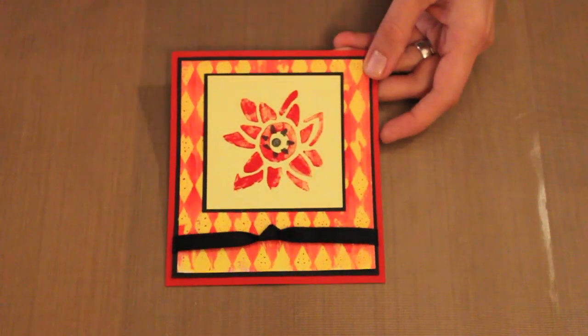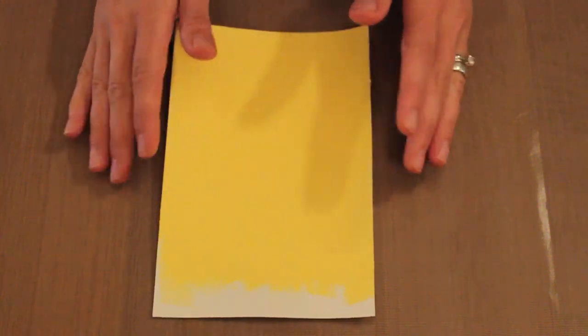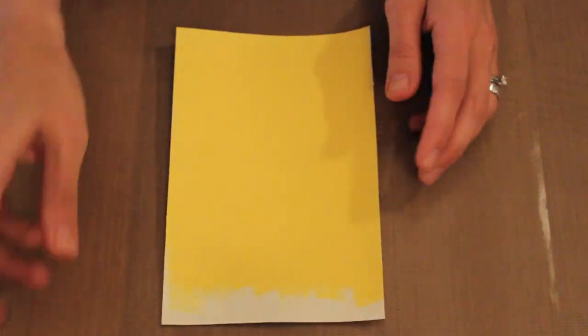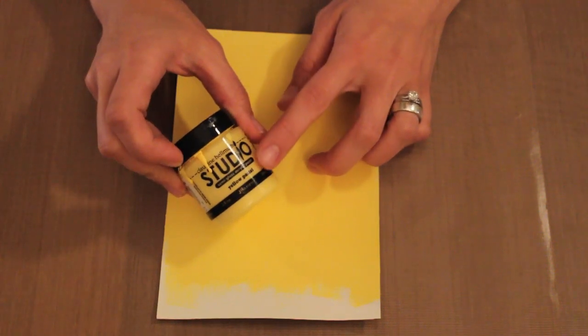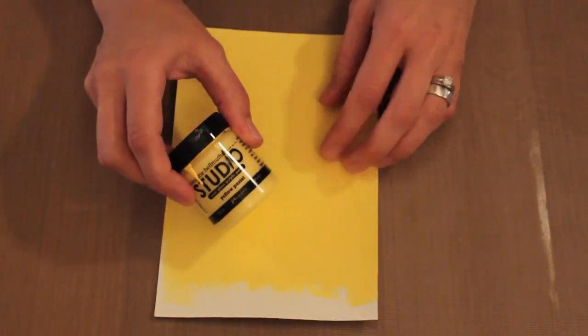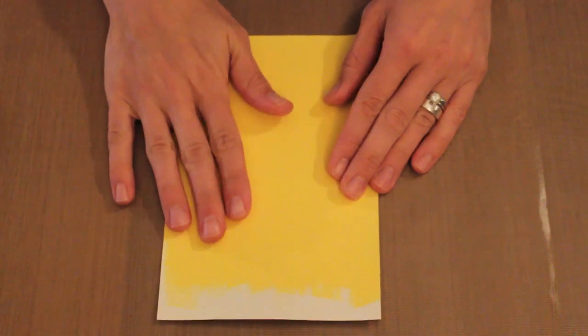Let me show you how easy this is to do. The first thing I'm going to start with is a piece of paper that has been painted. This is cardstock that I painted with a couple of coats of Claudine Helmuth's yellow pastel.